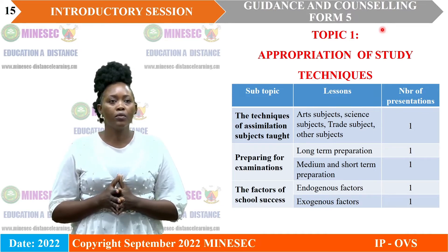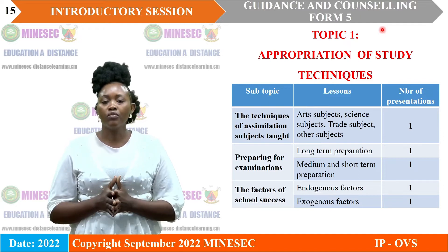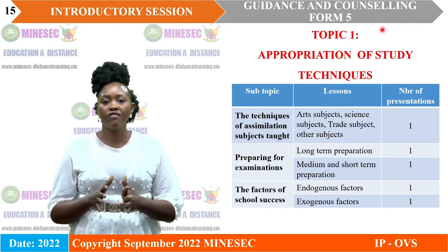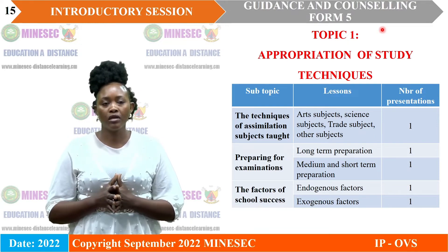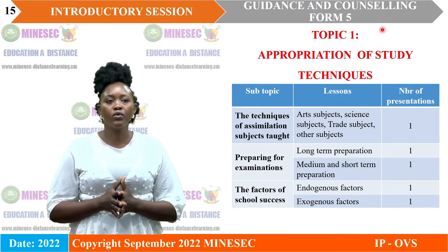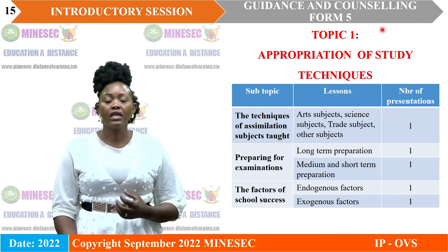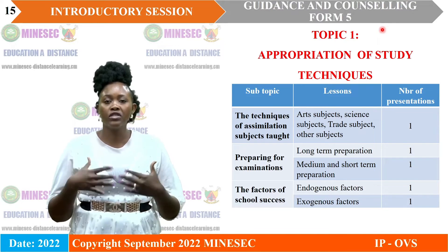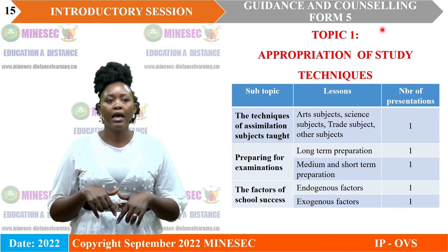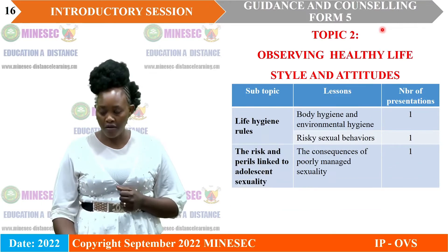The next subtopic under topic one is preparing for exams. Examination preparation is divided into three phases: long-term preparation, medium-term preparation, and short-term preparation. The next subtopic is factors of school success, divided into two lessons: endogenous factors, which are the psychological factors within the learner, and exogenous factors, which are mostly the sociological factors.